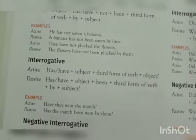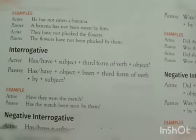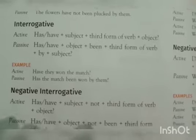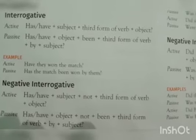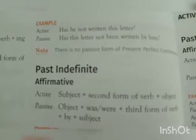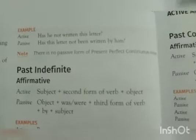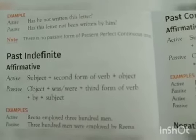Moving on to the present perfect interrogative, has and have come at the starting of the sentence, followed by a question mark at the end. For example: 'Have they won the match?' becomes 'Has the match been won by them?' For negative interrogatives, the structure is has/have plus subject plus not plus third form of verb plus object. Example: 'Has he not written this letter?' becomes 'Has this letter not been written by him?' Note: There is no passive form for present perfect continuous — that is the fourth form of present tense.